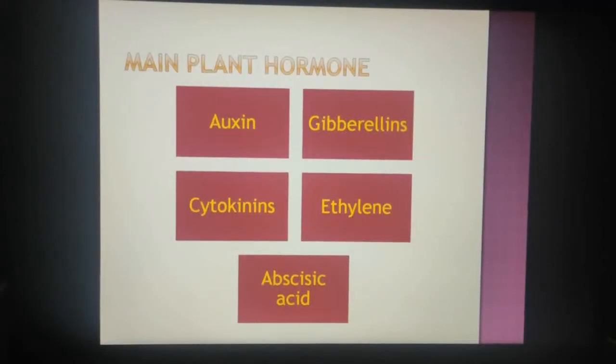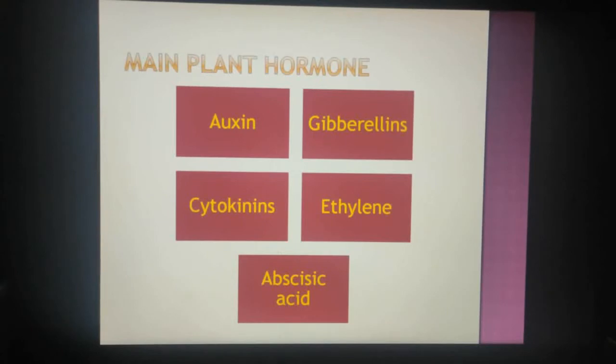The main plant hormones are auxin, gibberellin, cytokinin, ethylene, and abscisic acid. Today we are going to talk about auxin.